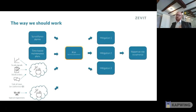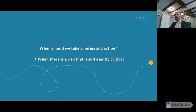We call them risks. You can also call them technical phenomena — things that could happen to your asset that we know of and have specified. When should we take a mitigating action? We should do so when there is a risk that is sufficiently critical. But how do we evaluate that?